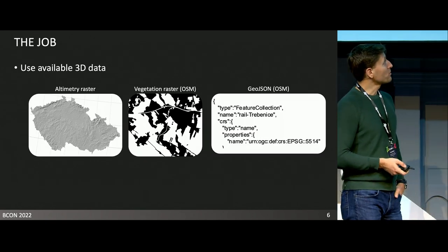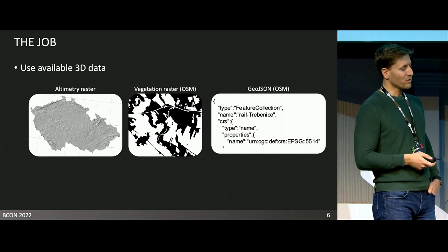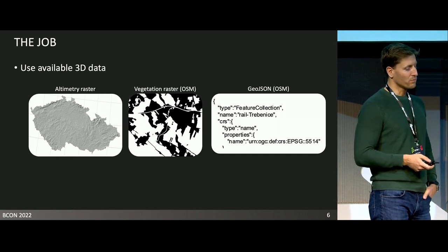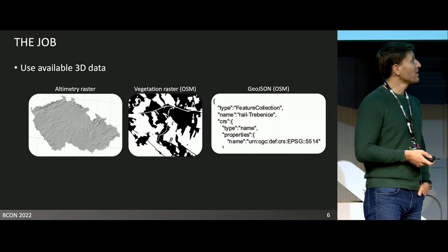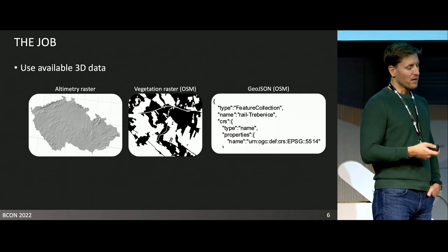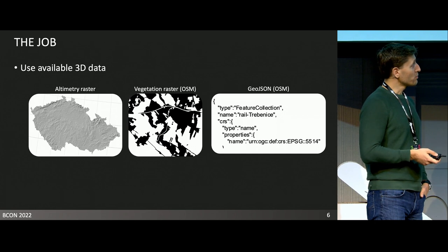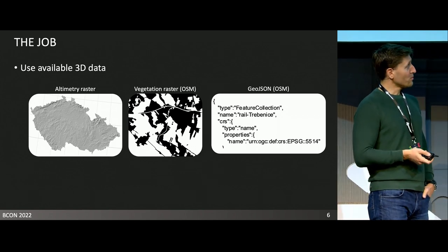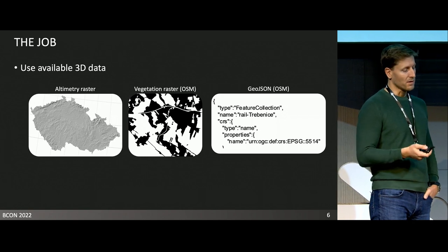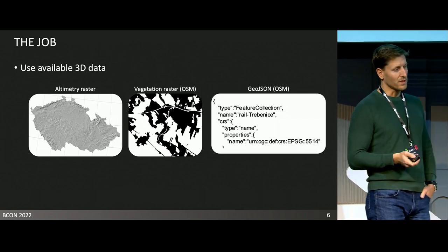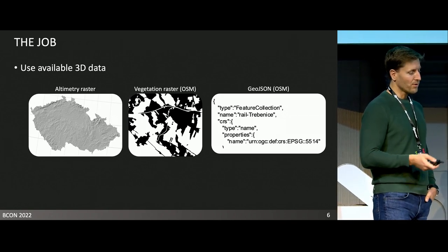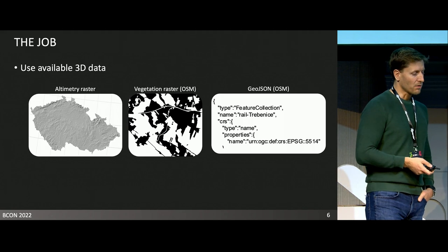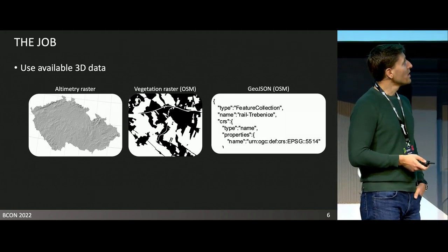What's the design of the simulator? We use Blender. Since it's a virtual replica of a specific part of a track in the Czech Republic, we tried to use as much digital data as possible. In the simulator we use altimetry rasters, vegetation rasters from OpenStreetMaps to populate vegetation on the terrain, and for the path of the tracks and all roads we use GeoJSON, also from OpenStreetMaps.